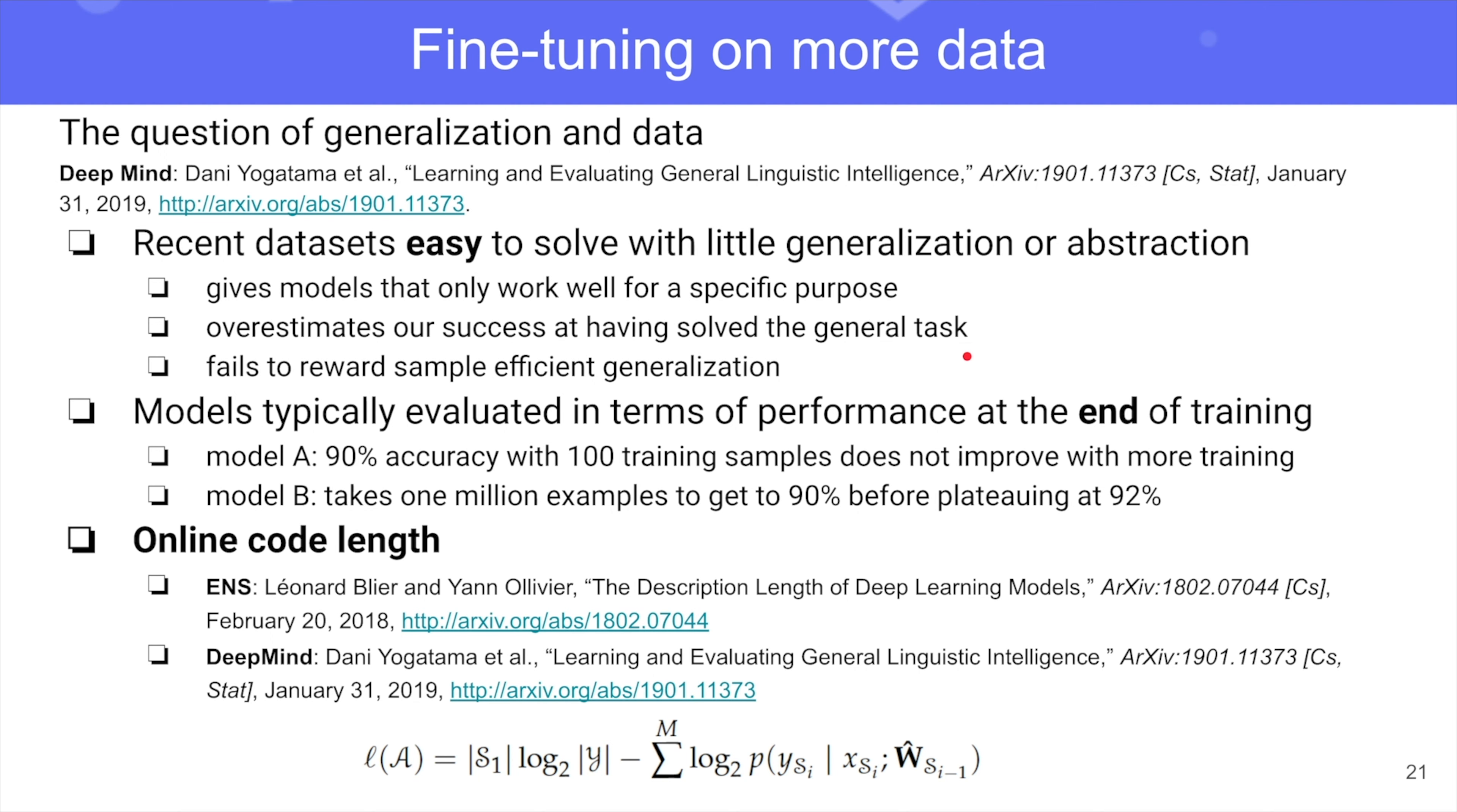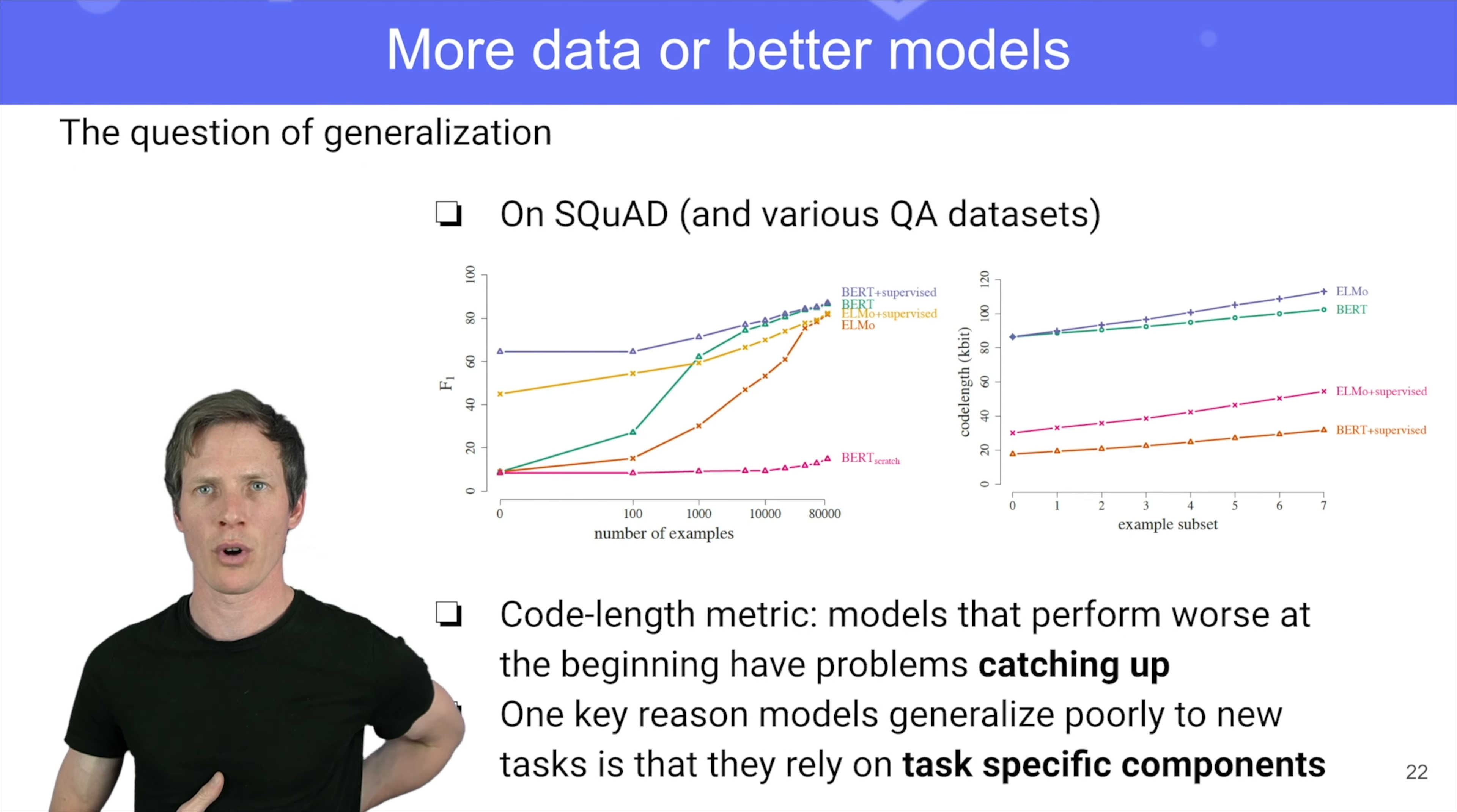There is a related metric which is called online code length, which says how much better your model will get with each additional sample. It's an information theory metric, which actually is related to how much you can compress your model. So it's a very important metric and it's actually probably the way to go forward.